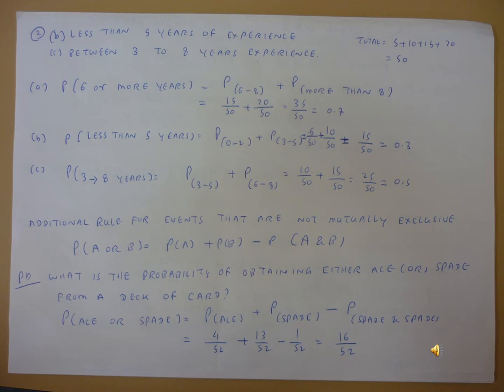P(3 to 8 years) equals P(3 to 5) plus P(6 to 8), which is 10 divided by 50 plus 15 divided by 50. That equals 25 divided by 50, so we get 0.5. That will be the answer for A, B, and C.